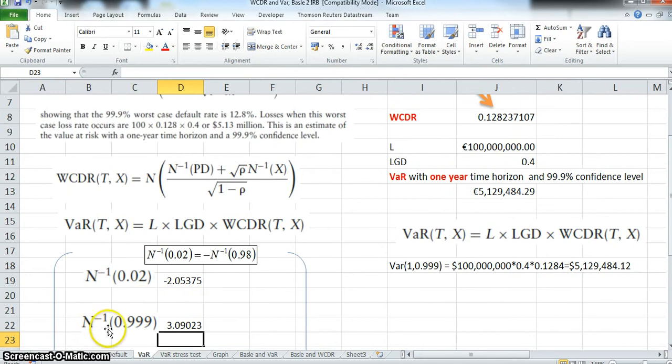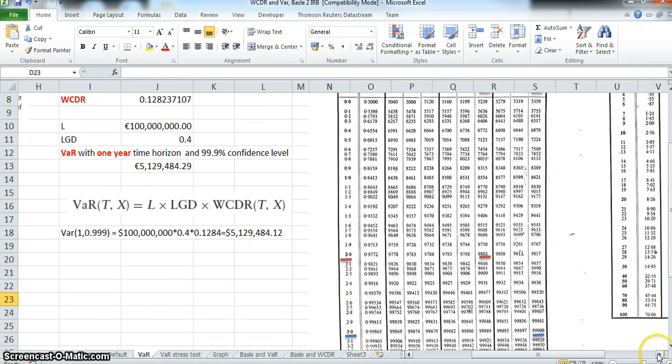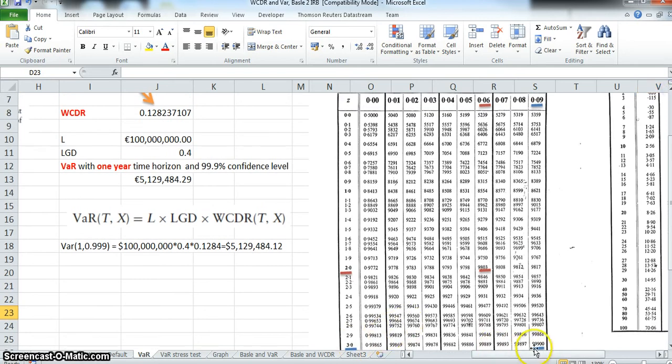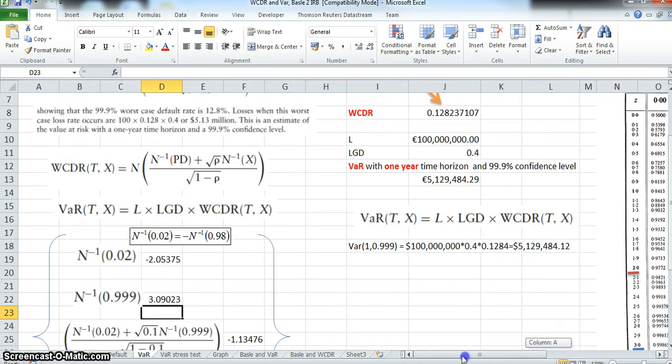There's no equivalent issue surrounding reading the inverse of 0.999 because when we read that value 0.999, it reads directly as 3.09, which is what we observe when we call down the Excel function NORM.S.INV 0.999.